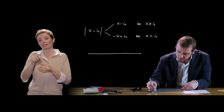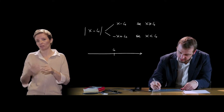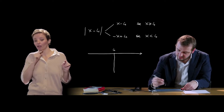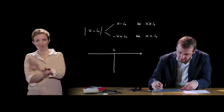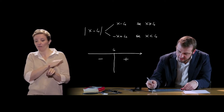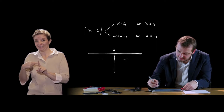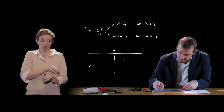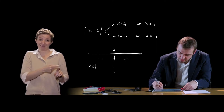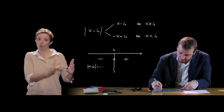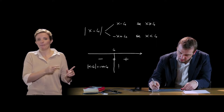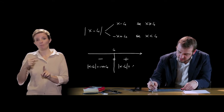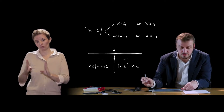Reasoning again with the oriented number line, the value 4 marks the dividing point between the region where the argument is negative and the region where the expression is positive. At x = 4 the expression equals zero. The modulus of x - 4 in the left region gives -x + 4, while in the right region it gives the argument itself.